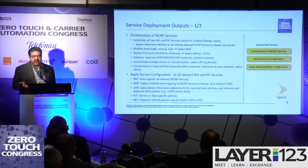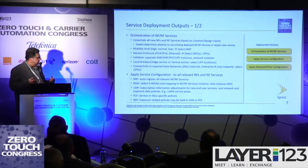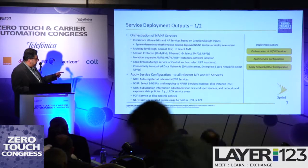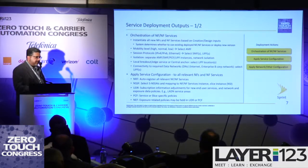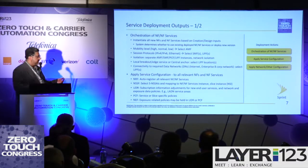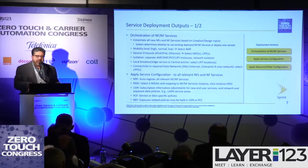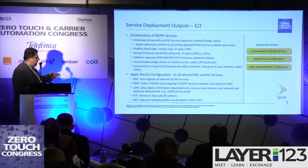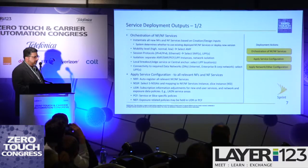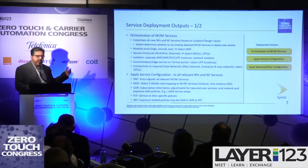Once your network functions are up, there's a lot of service-level configuration to do. The automation system can bulk-register all the new network functions and network function services into the NRF repository so it's all ready to go. If you're doing slicing, the NSSF — network slice selection function — is where you provision your SNSSAI values so when users connect, they go into the right slice type. There's also a lot of subscription information related to these new 5G services. For example, for LADN local area data networks, you provision what areas those are available and which users are subscribed to those — you put those in the UDR, the subscription information repository, which is the new version of the HSS.